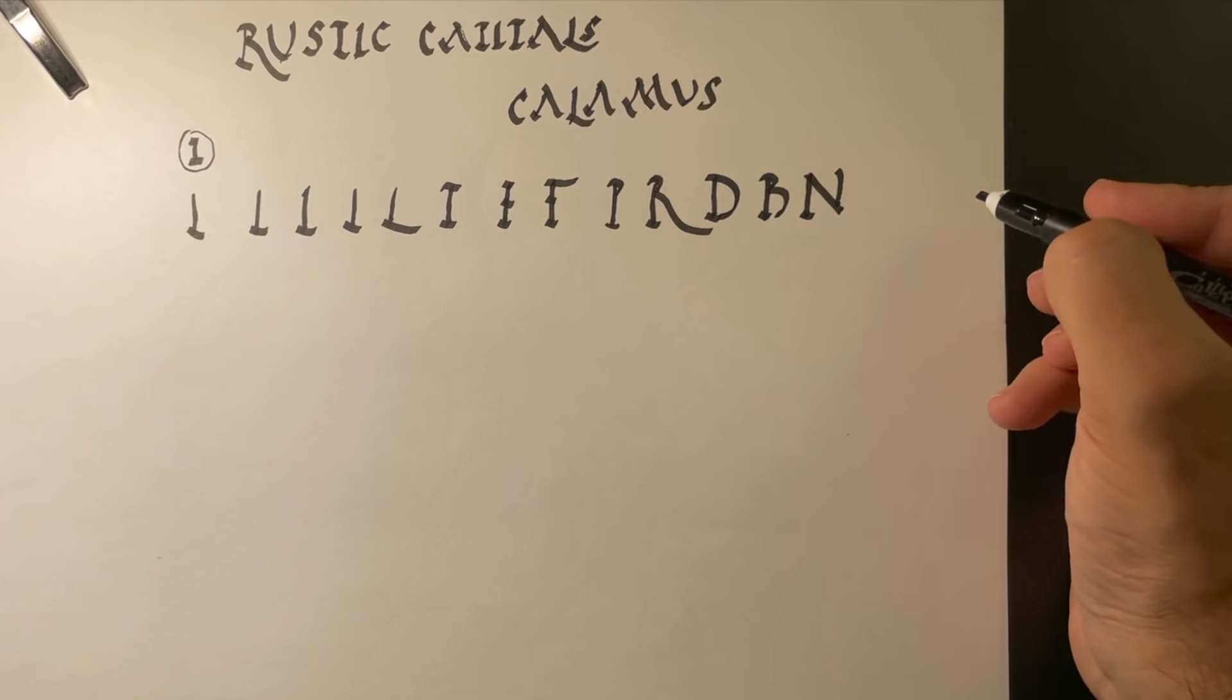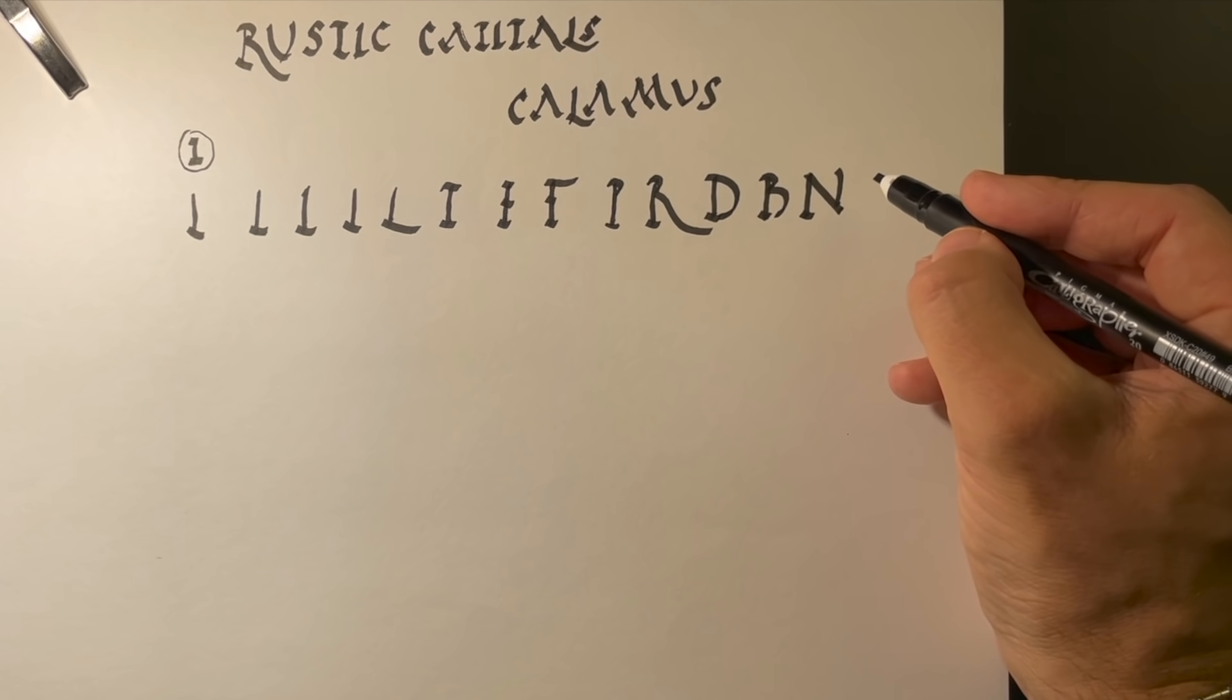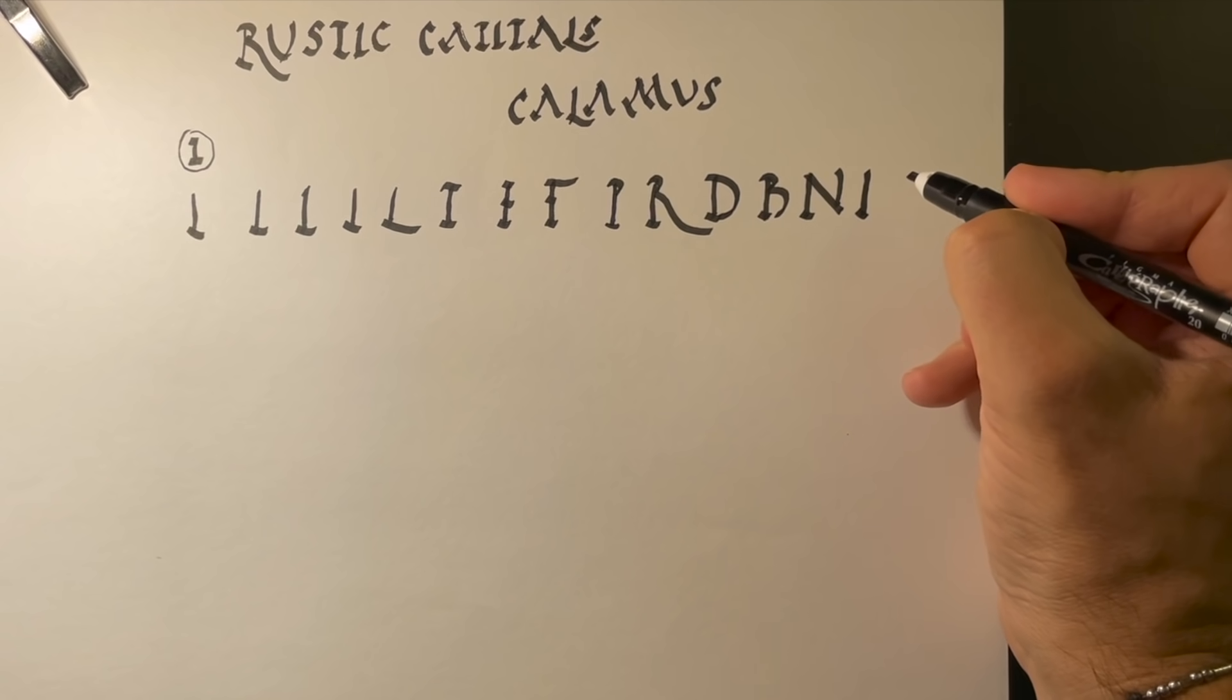And we can also use the same basic form, and do this, and we get an N. Sometimes it has a little hooky thing at the top, sometimes it doesn't. That's because of just the paintbrush glancing the page. It's not really a part of it, though.